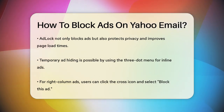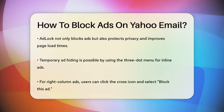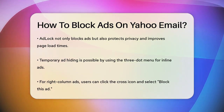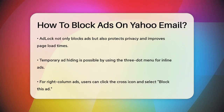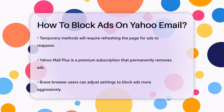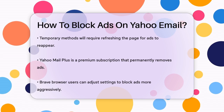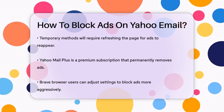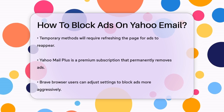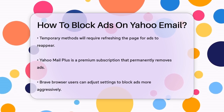Another option is to temporarily hide the ads. For inline ads, which appear in your inbox and look like regular emails, you can click the three-dot menu on the right side of the ad and select 'Dislike this ad.' For right column ads, which are larger and often animated, click the cross icon in the top-right corner of the ad window, press the 'Block this ad' button, and choose a reason for blocking it. However, these methods are temporary, and the ads will reappear after you refresh the page.